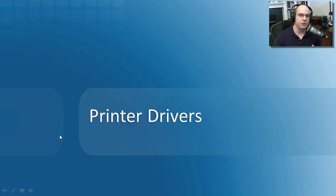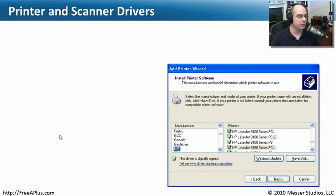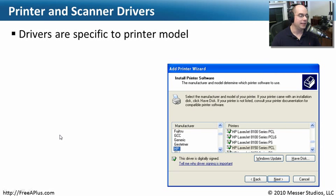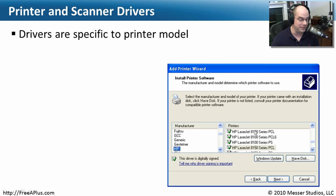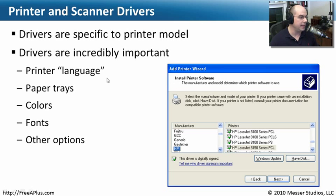Whenever we're working with printers and making sure we can print properly, one of the fundamental things that has to be working perfectly is the printer driver. The printer driver — and even a scanner driver in the same way — has to be specific to the model you're using. For instance, if we're installing an HP printer, you can see all these different HP printers. Here's an HP LaserJet 8100 series: one driver talks PCL, there's a driver for PCL6, and another for PostScript — all the same physical printer. You want to be sure the driver you're using matches the configuration and capabilities of the printer you're connecting to.